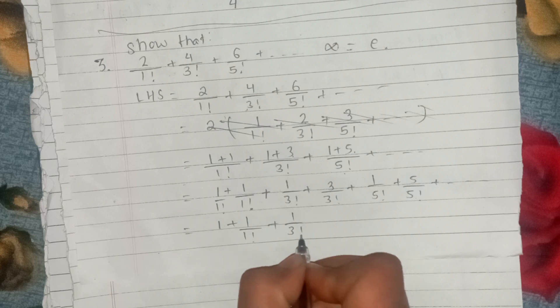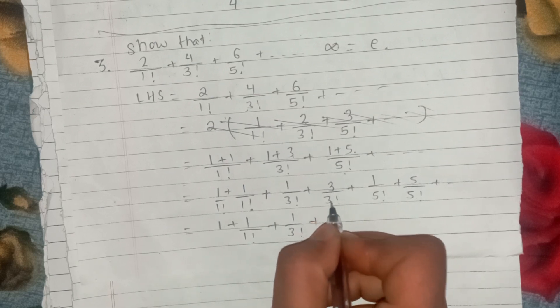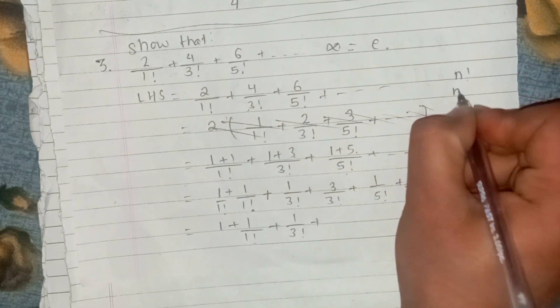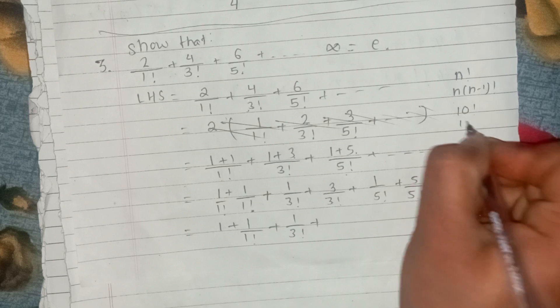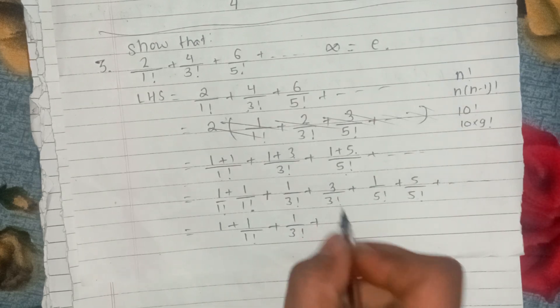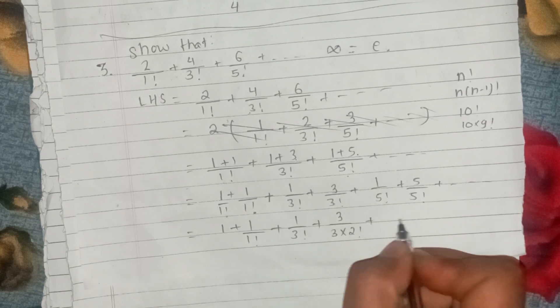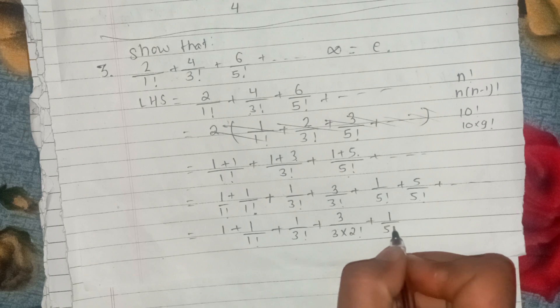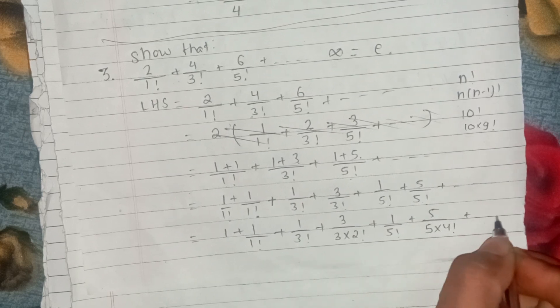We have to get 1 by 3 factorial plus 3 factorial. We need: 10 into 9 factorial, 3 factorial is 3 into 2 factorial. Then 1 by 5 factorial plus 5 by 5 into 4 factorial — 5 factorial will bring out 4 factorial.